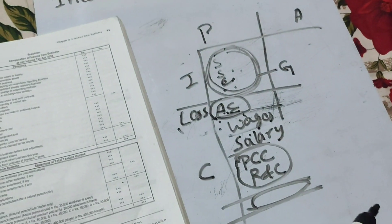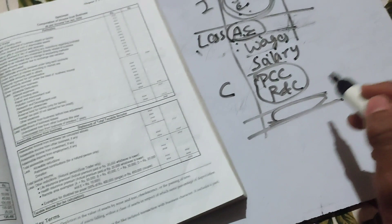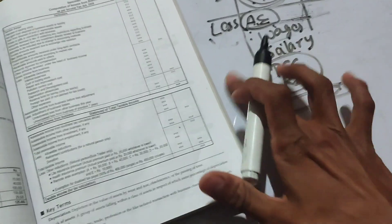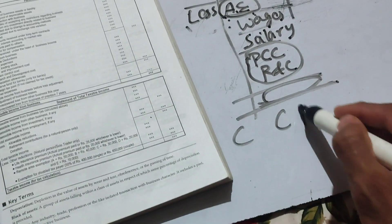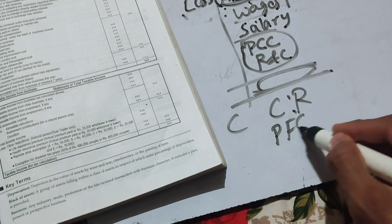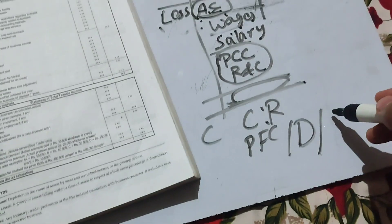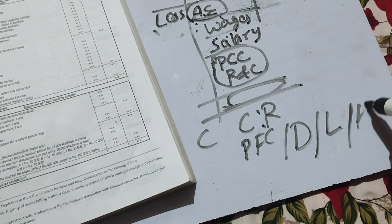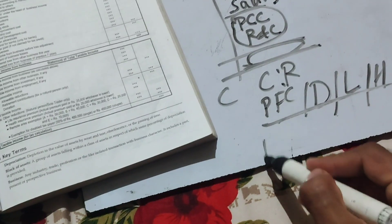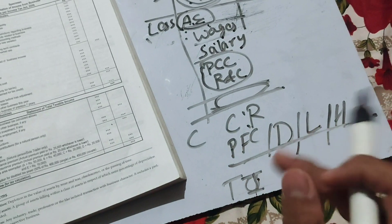After calculating taxable income from business or profession, we go to the third part — common reductions. Common reductions include provident fund contribution, donations, life insurance premium, and health insurance premium. After applying these common reductions, we arrive at taxable income and then calculate tax liability using the applicable slab rates.